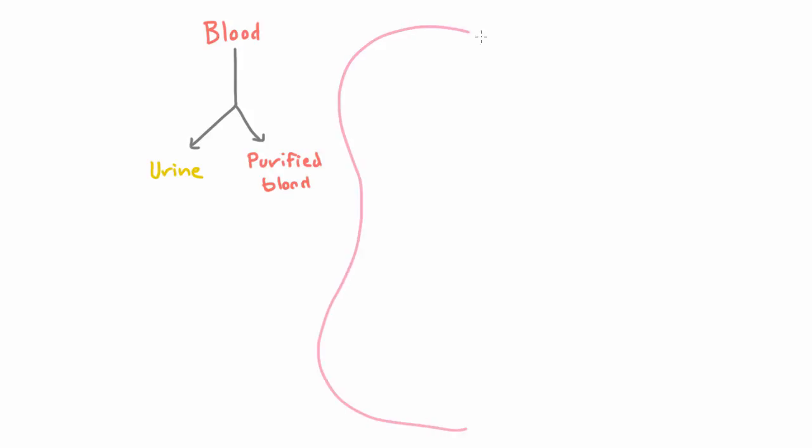So here's a kidney. We know that blood first comes into the kidney through the renal artery, and the renal artery then splits into many smaller vessels. These smaller vessels fan out towards the outside of the kidney.